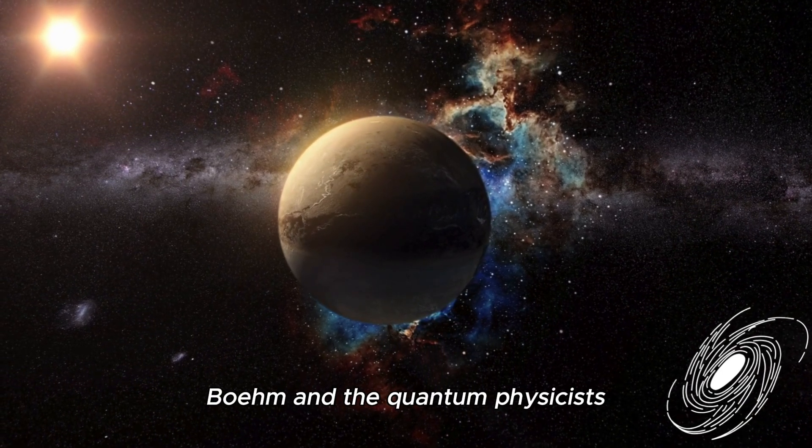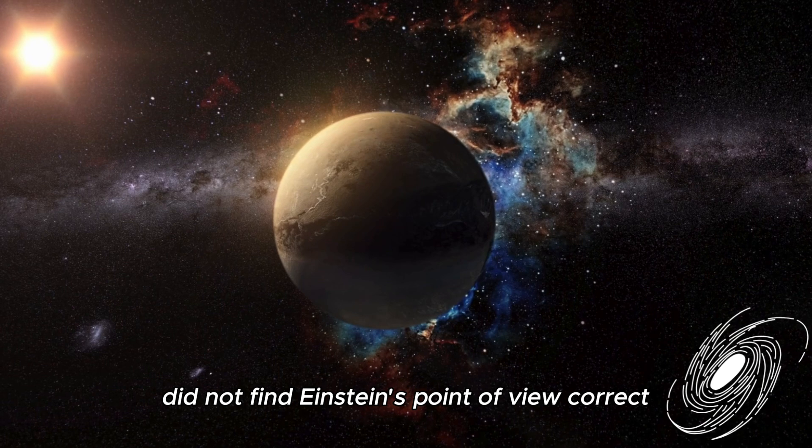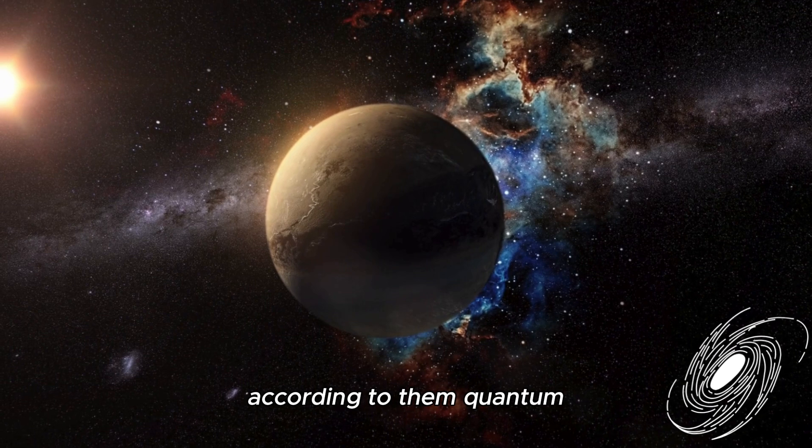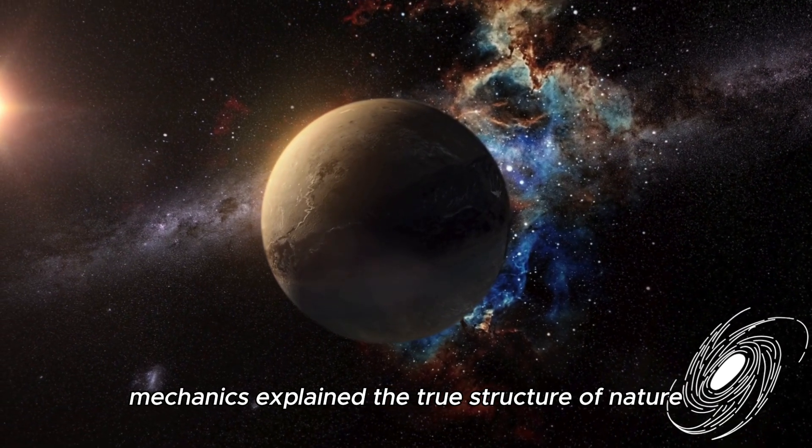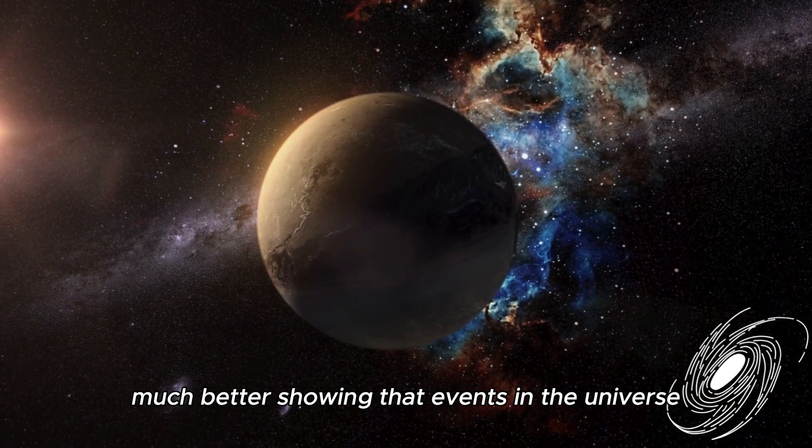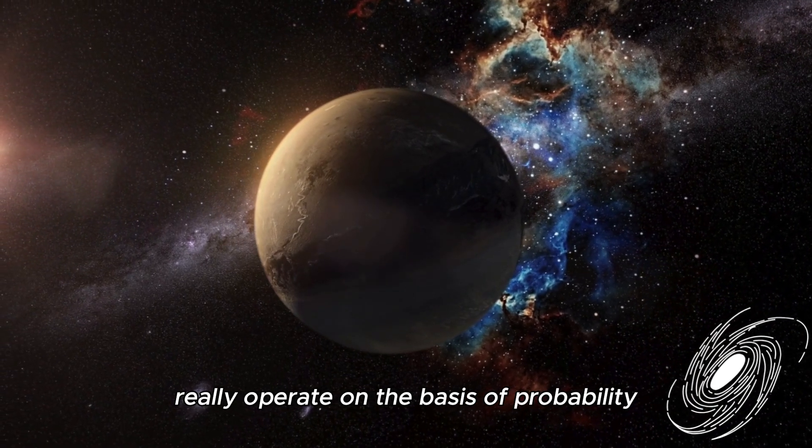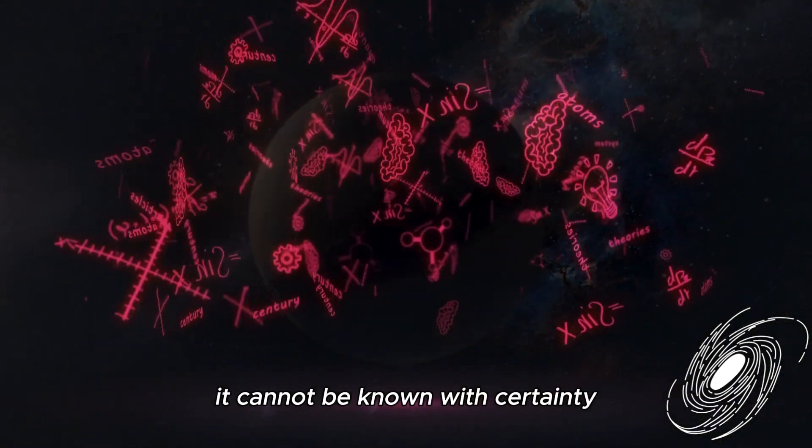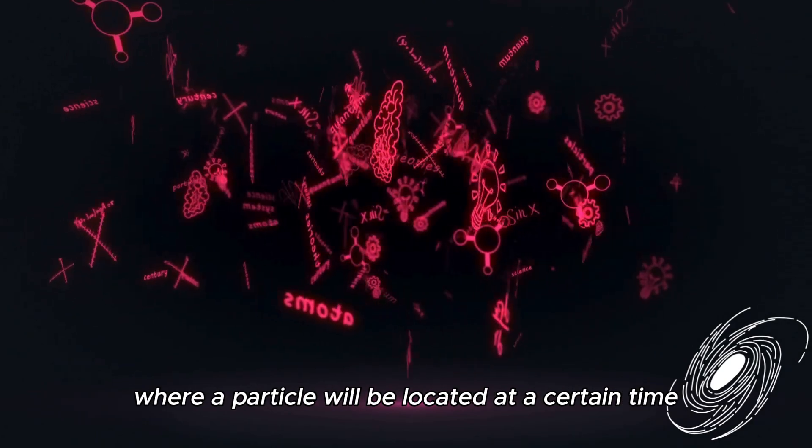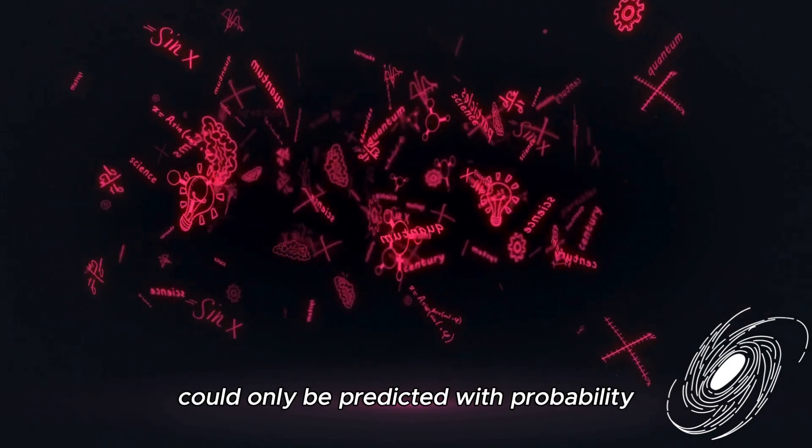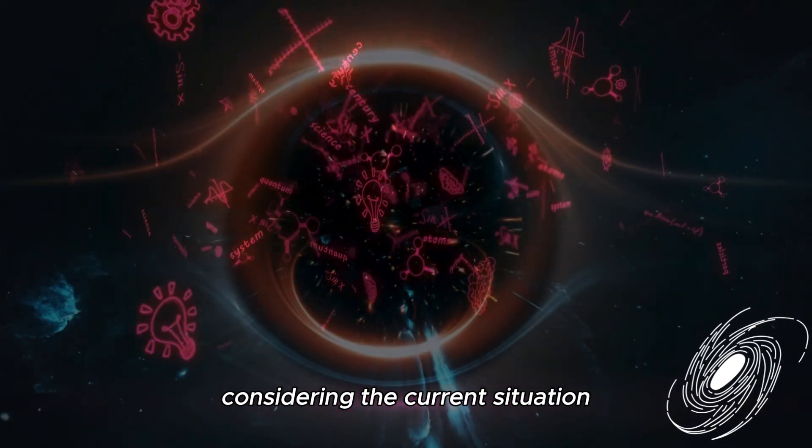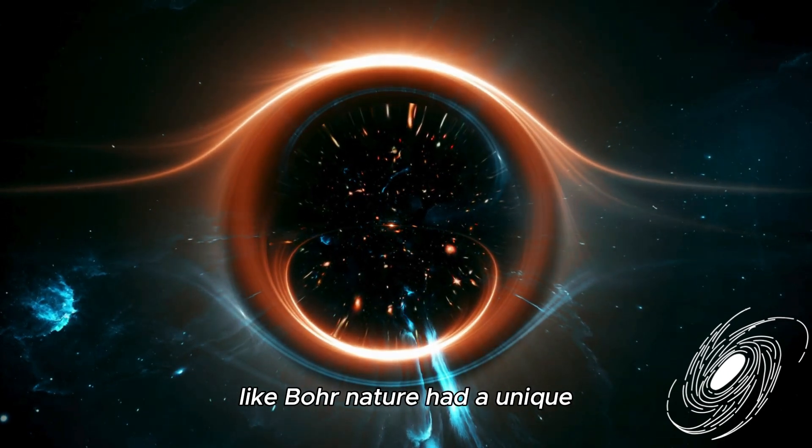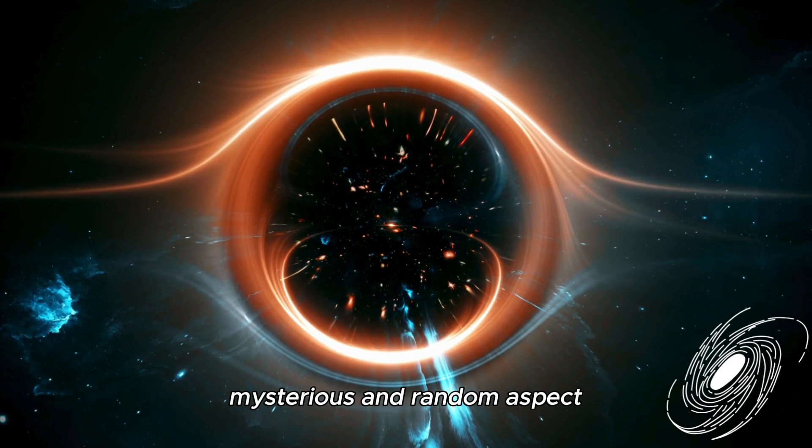Bohr and the quantum physicists did not find Einstein's point of view correct that randomness in nature resulted only from lack of information. According to them, quantum mechanics explained the true structure of nature much better, showing that events in the universe really operate on the basis of probability. For example, according to quantum mechanics, it cannot be known with certainty where a particle will be located at a certain time. It could only be predicted with probability considering the current situation. This uncertainty showed that for quantum physicists like Bohr, nature had a unique, mysterious, and random aspect.